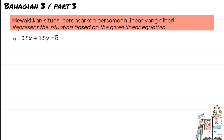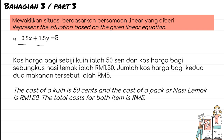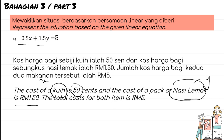Part three: represent a situation based on a given linear equation. You can create any situation as long as it satisfies the equation. For 0.5x + 1.5y = 5 — for example: the cost of a kuih is 50 cents and the cost of a pack of nasi lemak is RM1.50. The total cost for both items is RM5. Here x represents the number of kuih and y represents the number of nasi lemak.